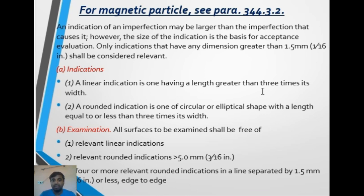Next is magnetic particle, per para 344.3.2. An indication of an imperfection may be larger than the imperfection itself; however, the size of the indication is the basis for acceptance evaluation. Only indications with dimensions greater than 1.5 mm shall be considered relevant.